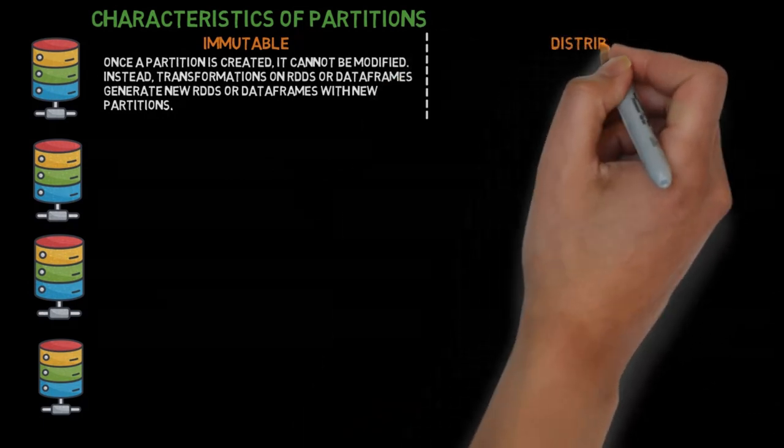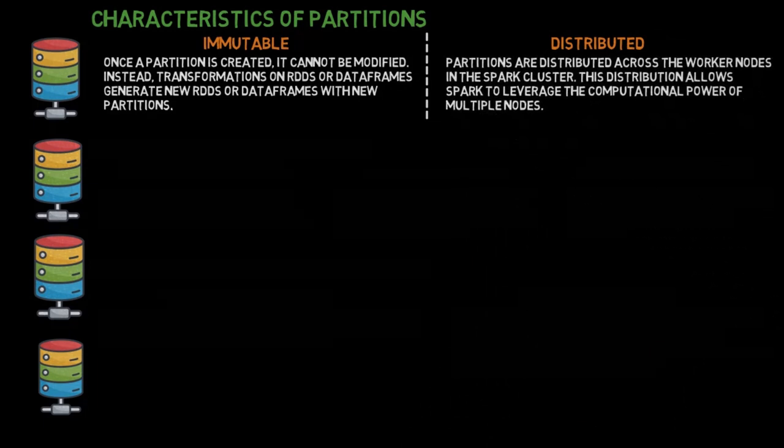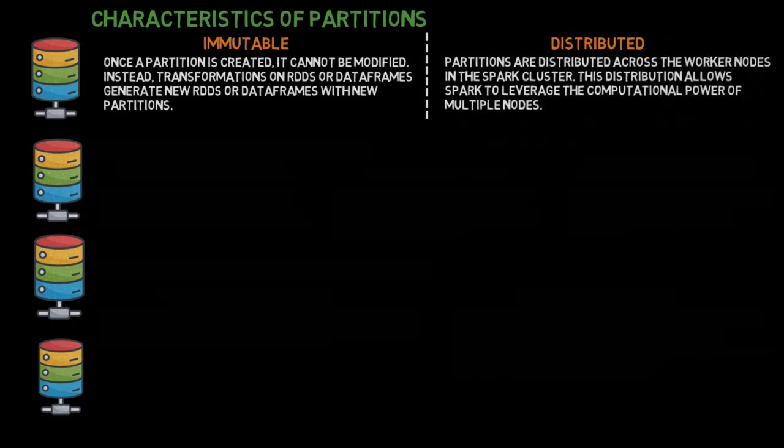Distributed: Partitions are distributed across the worker nodes in the Spark cluster. This distribution allows Spark to leverage the computational power of multiple nodes.